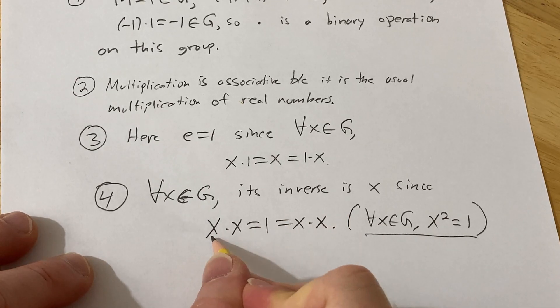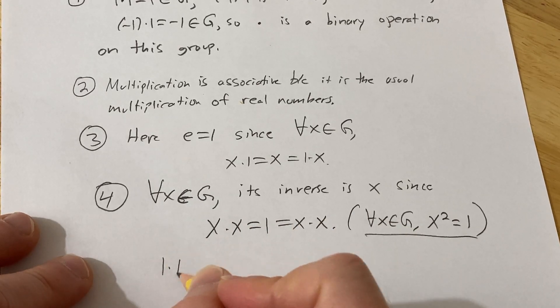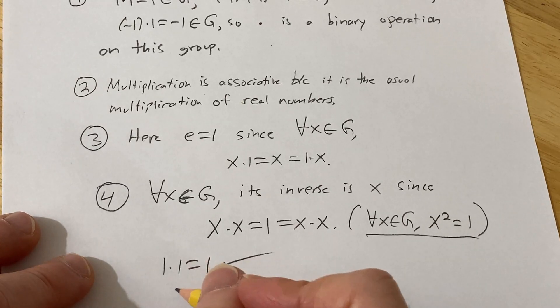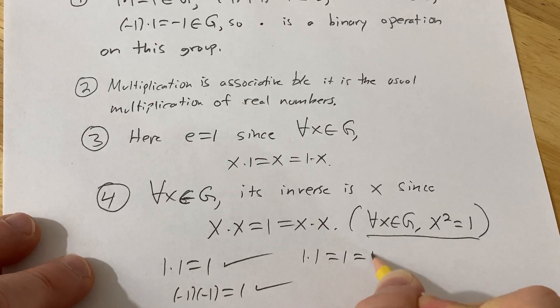You know, if you take 1, 1 times 1 is 1. If you take negative 1, negative 1 times negative 1 is 1. I mean, we can check 1 times 1 is 1. That takes care of the element negative 1, and you could do this if you really wanted to be pedantic.